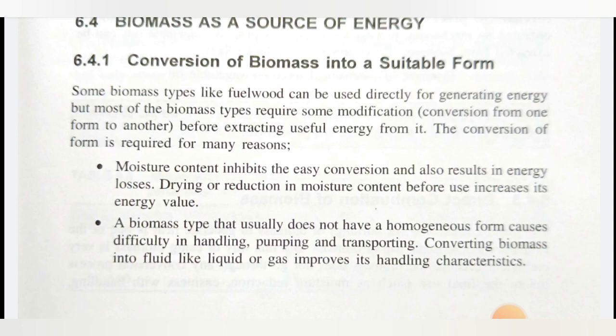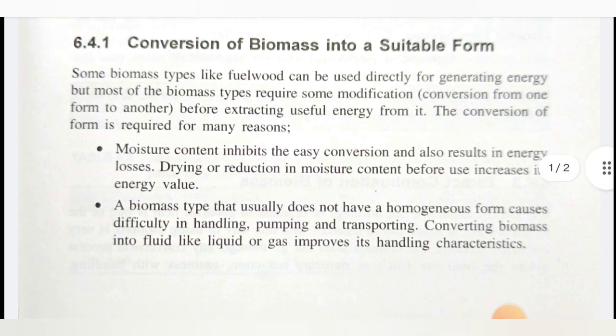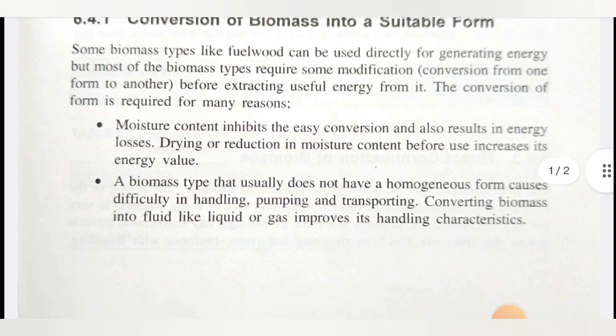Let us see the reasons why we have to convert biomass from one form to another. The first reason is that moisture content inhibits easy conversion and also results in energy losses. For example, with animal dung or wood fuel, if there is moisture content, we are not directly able to use it, and it causes energy loss. Drying or reduction of moisture content before use increases its energy value — that is one reason we have to do some conversion processes.